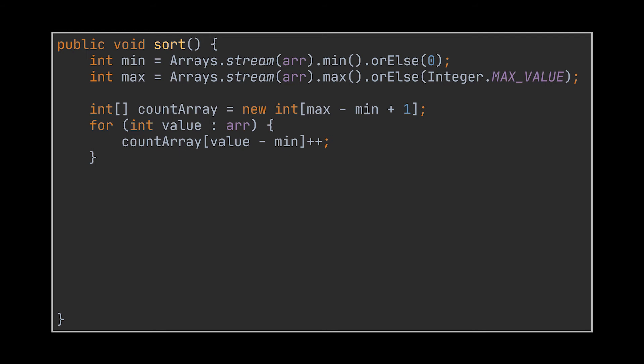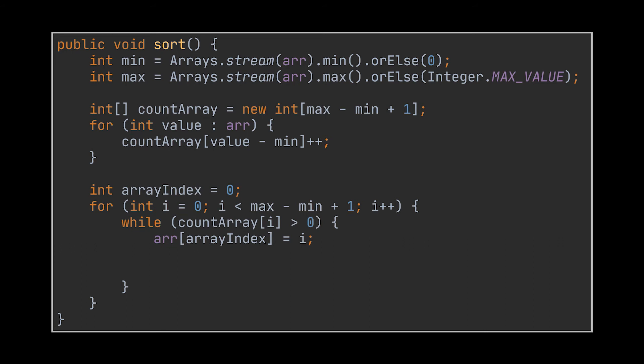After counting the number of occurrences, we loop over the newly created array using a for loop starting at zero and going all the way to max minus min plus one. While the number of occurrences stored inside each slot is greater than zero, we store the index — plus the minimum added back — into the initial array at the current sorted position. The occurrences count is then decremented to avoid an infinite while loop, and the initial array index counter is incremented so we place the next integer in the correct position.